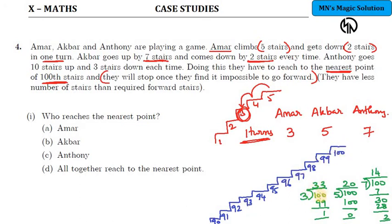On the hundredth step, in one turn Amar takes three steps upwards. So on the three steps, when I divide, I can check out for the number of turns. So on the thirty-third turn, he would be at ninety-ninth step because three into thirty-three is ninety-nine.